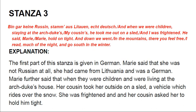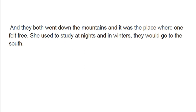The third part of this stanza begins in German. Marie says she was not Russian at all — she came from Lithuania and was German. Marie further says that when they were children living at the archduke's house, her cousin took her outside on a sled, a vehicle which rides over the snow. She was frightened, and her cousin asked her to hold on tight as they went down the mountains — a place where one felt free. She used to study at nights in winter, and they would go south.